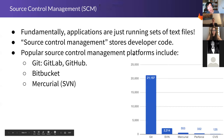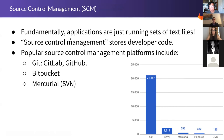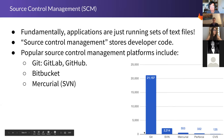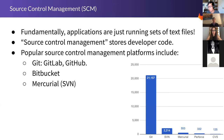Source control management — GitLab is source control management. Every single application is just a running set of text files, and developers need a tool to store all this code. That's what source control management is. The market is consolidating on Git. Git is different from GitLab — Git is free and open source. What GitLab and GitHub do is take Git as the underlying engine, add on features, and repackage and sell it. That's how people make money off open source software like Git.